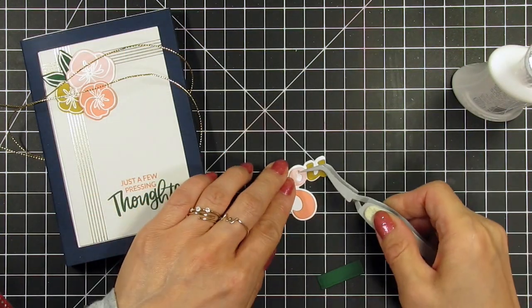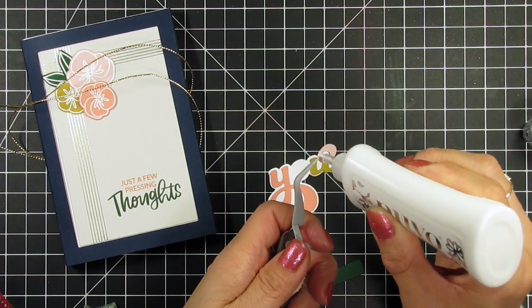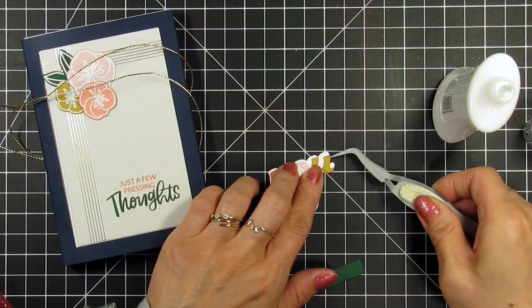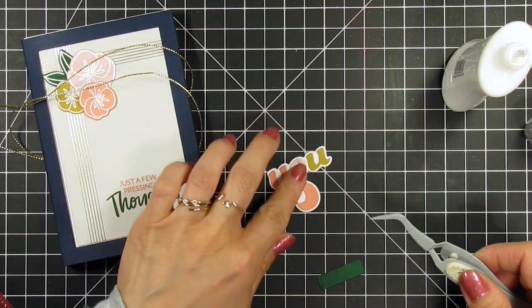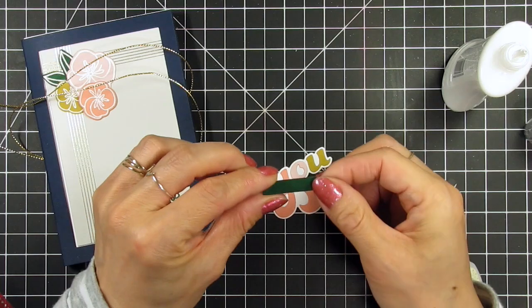This is a die set called All About You designed by Julie Ebersole and it's the cutest layering die that spells the word 'you'. I die cut the base in white linen cardstock to match the base of the note cards. Then I use the same cardstock colors as the flowers for each of the letters. I adhered them using liquid glue.